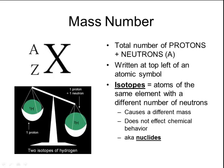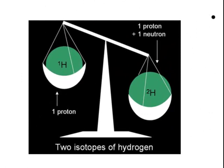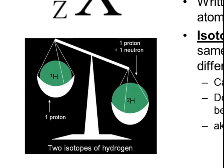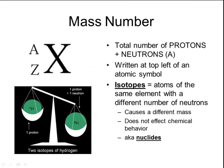You can see in the picture that the hydrogen on the left-hand side has a mass number of 1, and the hydrogen on the right-hand side has a mass number of 2. One isotope of hydrogen is heavier than the other, but this does not affect its chemical behavior. Sometimes instead of the word isotope, you may hear the word nuclide — they're the same thing.